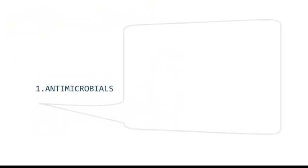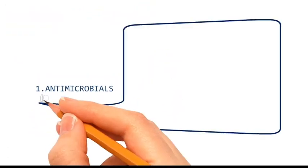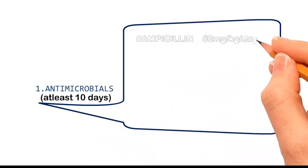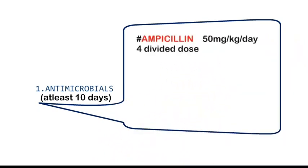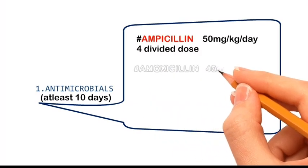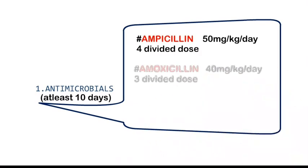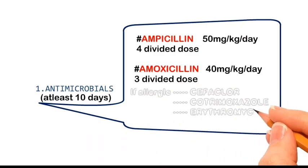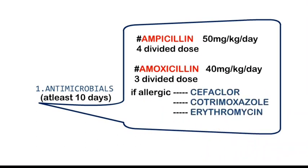Antibacterial therapy should be given for at least 10 days. Usual drugs include ampicillin 50 mg per kilogram per day in 4 divided doses, amoxicillin 40 mg per kilogram per day in 3 divided doses. If allergic to penicillin, co-trimoxazole or erythromycin may be given.